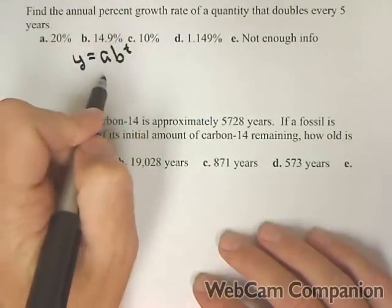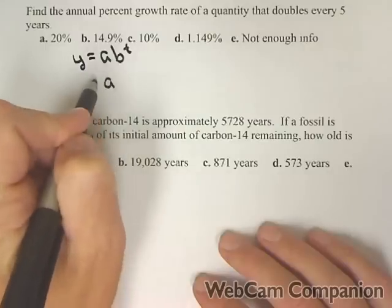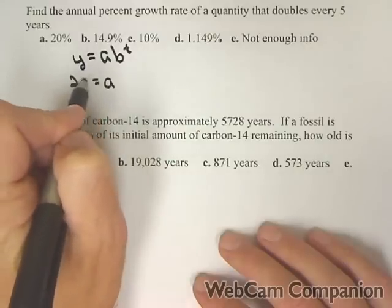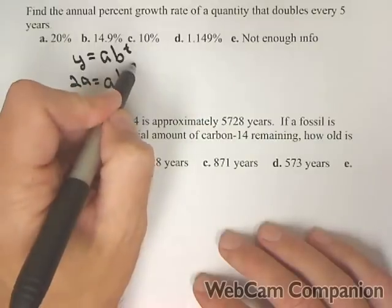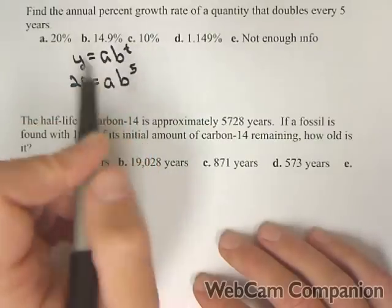Well, we want to find out how long it takes to double. So we want to find out how long it takes for a to turn into 2a, with a base of b. And we know how long it's going to take. It's going to take five years.